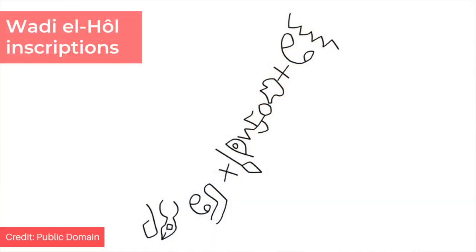In 1993, similar inscriptions to those at Serabit were discovered in the Wadi El Hol near Luxor. The inscriptions consisted of two lines carved into limestone rocks in the valley. At first it was thought they might be older than those at Serabit, but experts now think that they came later. It's likely that miners from Serabit el-Khadim, who were familiar with the script, travelled to Wadi El Hol. It took a very long time before alphabetic scripts caught on, and it's not entirely clear how they travelled from Serabit el-Khadim to other areas, but it was probably via Canaanite caravans.